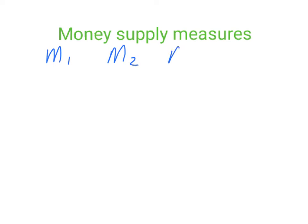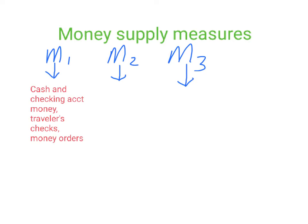There are three money supply measures in the United States: M1, M2, and what's called M3. Of the three money supply measures, M1 is the smallest one. It has cash and checking account money that is held by the public — meaning businesses or households — or traveler's checks or money orders.